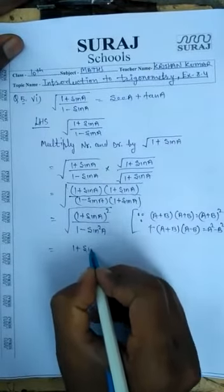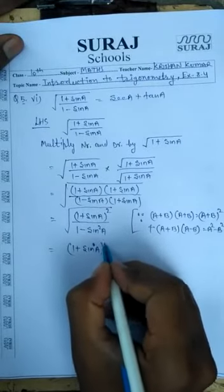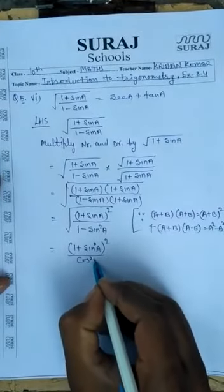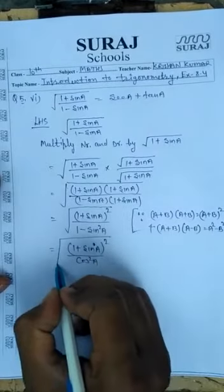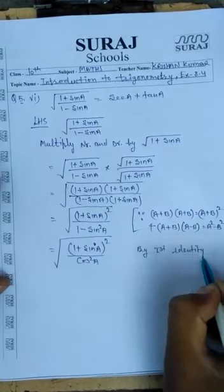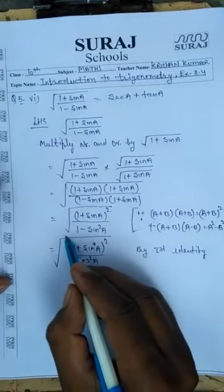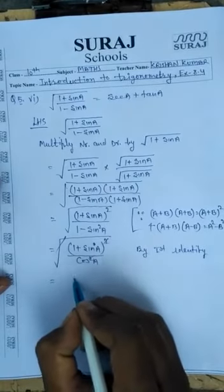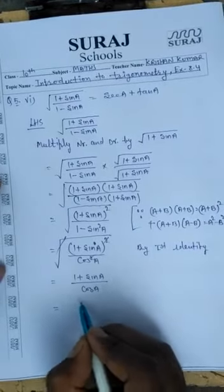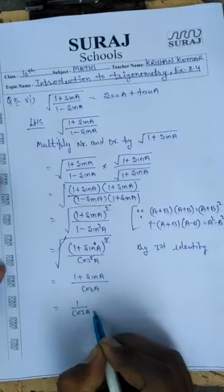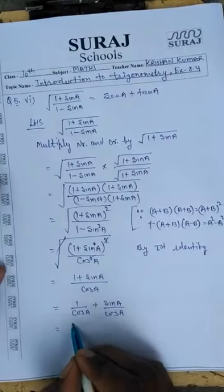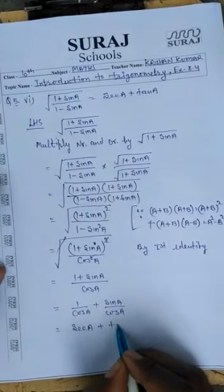We have 1 plus sin A whole squared in the numerator, and in the denominator 1 minus sin squared equals cos squared A by the first identity, all under square root. The whole square and square root cancel, giving 1 plus sin A upon cos A. Separating the terms: 1 upon cos A plus sin A upon cos A, which equals secant A plus tan A.